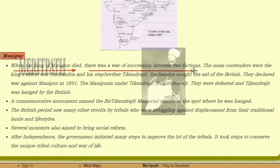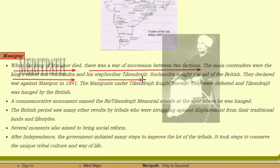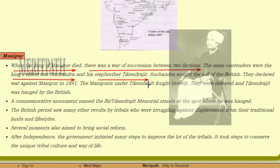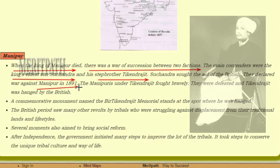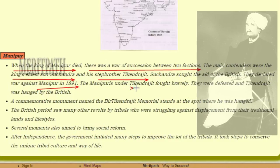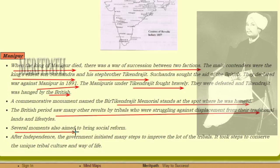Now let's discuss the revolts in Manipur. When the king of Manipur died, there was a war of succession between two parties. The main contenders were the king's son Suchendra and his stepbrother Tikendrajit. Suchendra sought aid from the British and declared war against Manipur in 1891. The Manipuris under Tikendrajit fought bravely but were defeated by the British, and Tikendrajit was hanged by them.